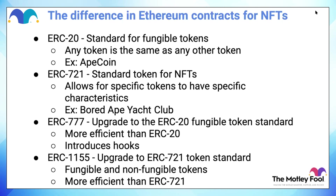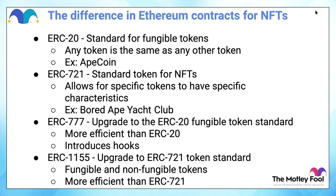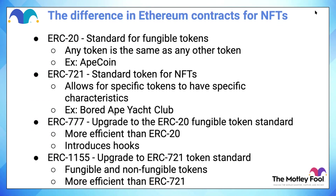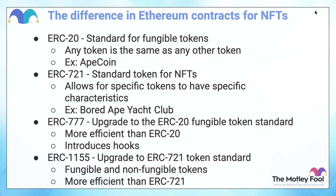The same thing goes for ERC-1155 — that could be the standard for NFTs, but it typically hasn't been. It seems like it's preference, and maybe it depends on your use case. ERC-1155 would actually allow you to have an NFT and a fungible token under the same token standard — you could have both. But we just haven't seen this in practice all that often; most bigger projects are using the ERC-721 contract. As for whether there's a value difference between the two contracts — the answer is no. I wouldn't think twice about buying an NFT that's on ERC-1155 versus ERC-721; it's going to be the same thing.